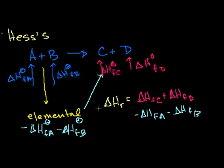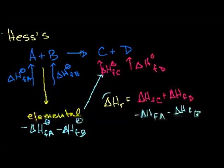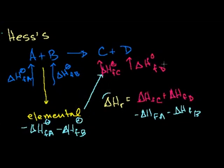If this number is negative, we released energy — the reaction is exothermic. If this number is positive, there's more energy needed on the product side, so we would have to absorb energy and it would be endothermic. So that's Hess's Law in the abstract — let's actually apply it to some problems.